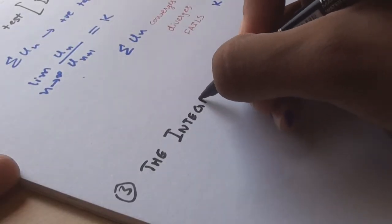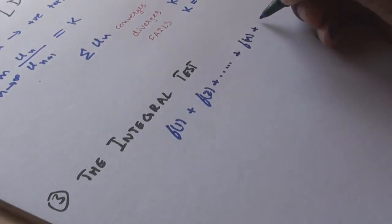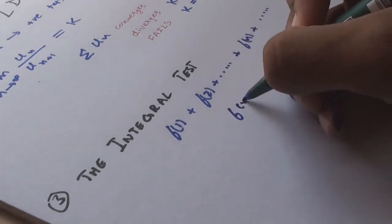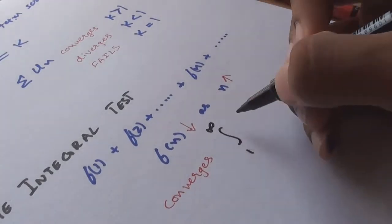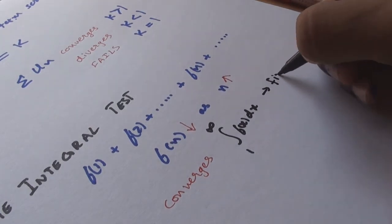The integral test. Consider a positive term series f(1) + f(2) + f(3) + f(n) and so on, where f(n) decreases as n increases. Then the series converges if the integration of f(x)dx from 1 to infinity has a finite value, but diverges if it has an infinite value.